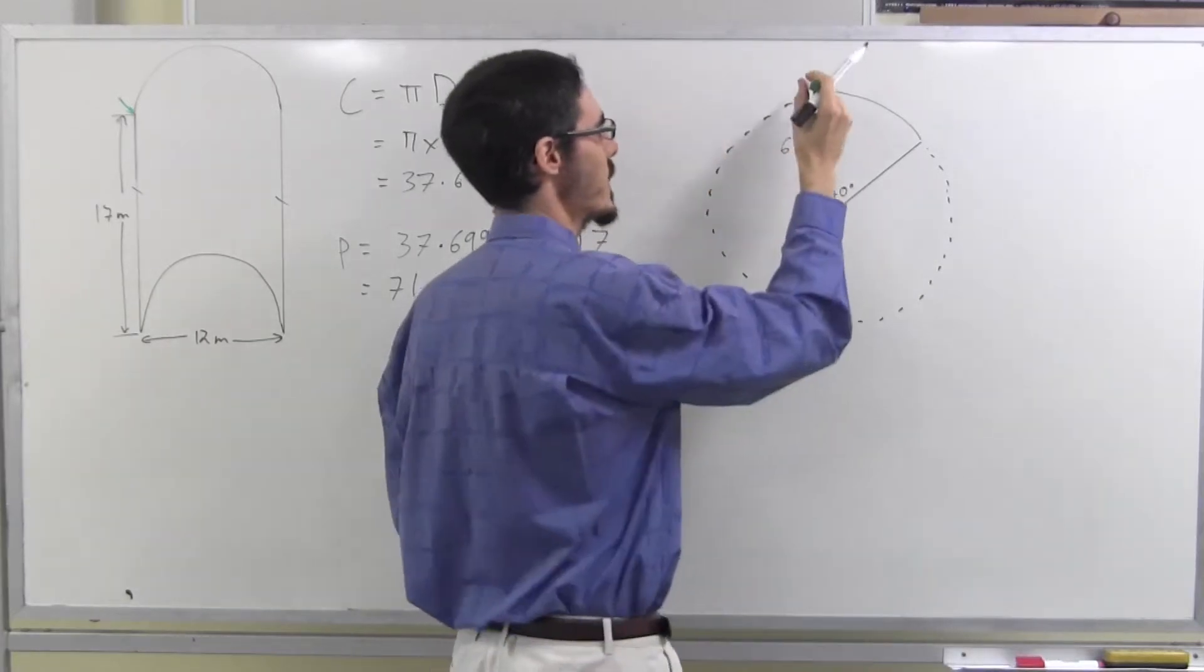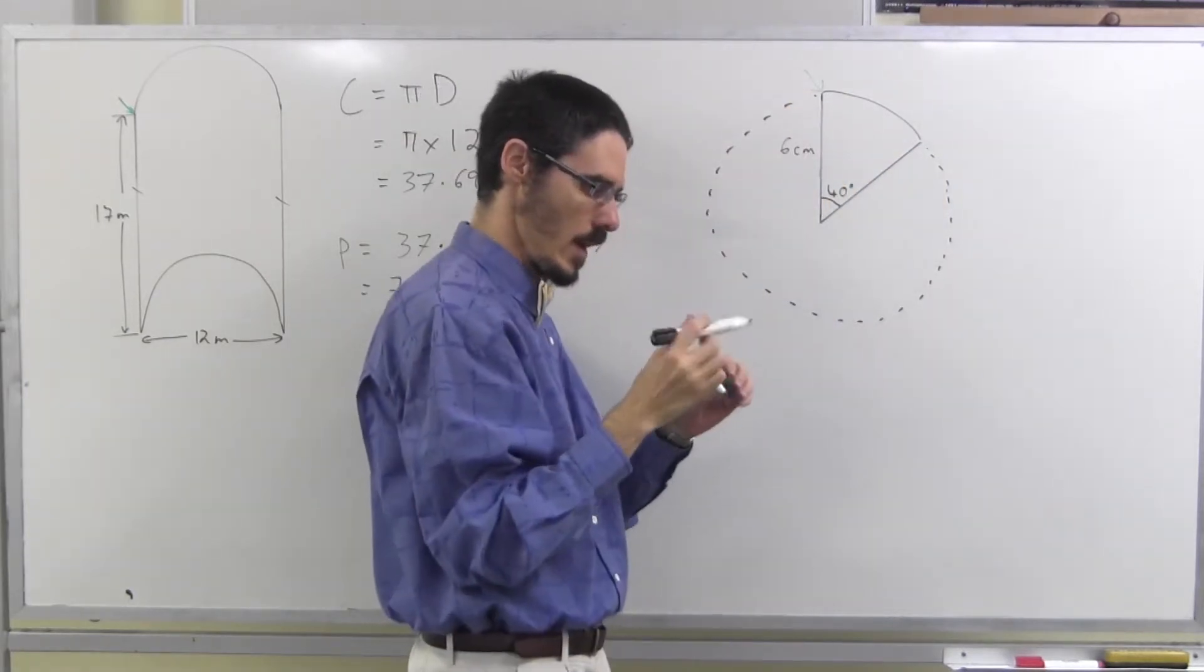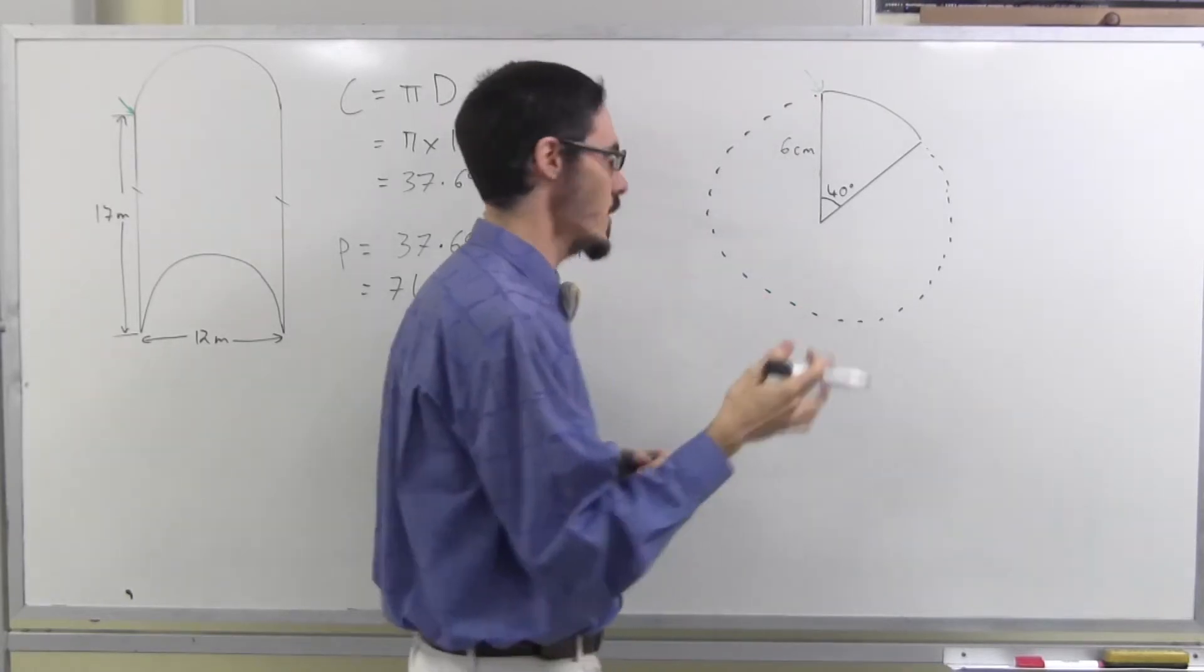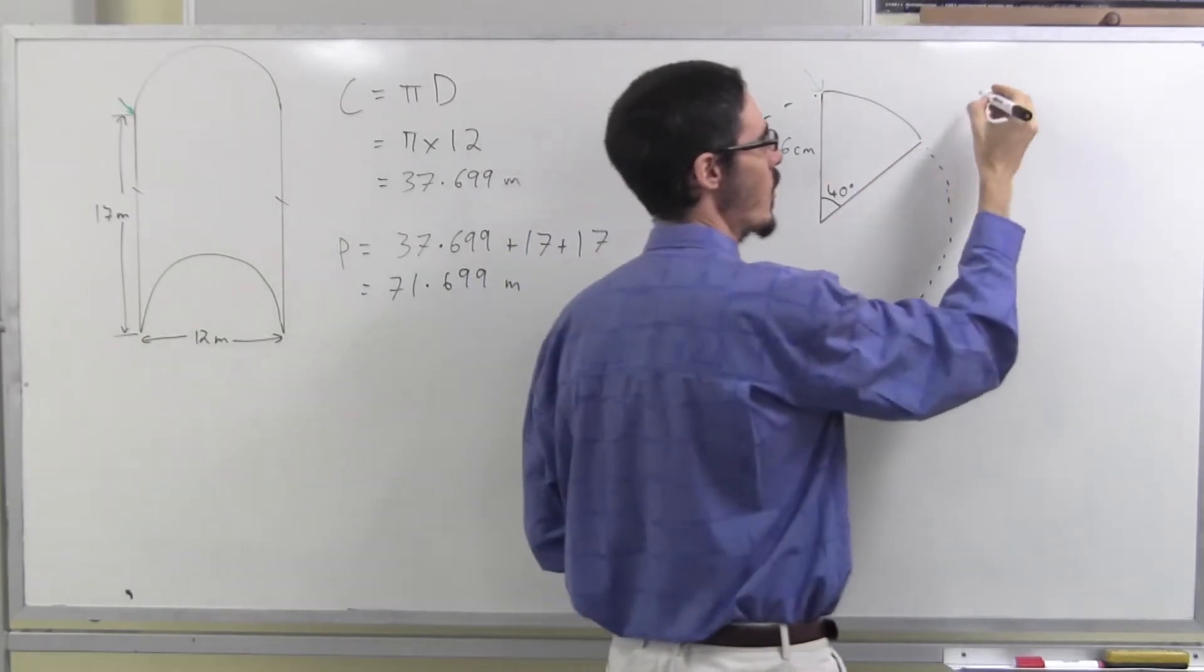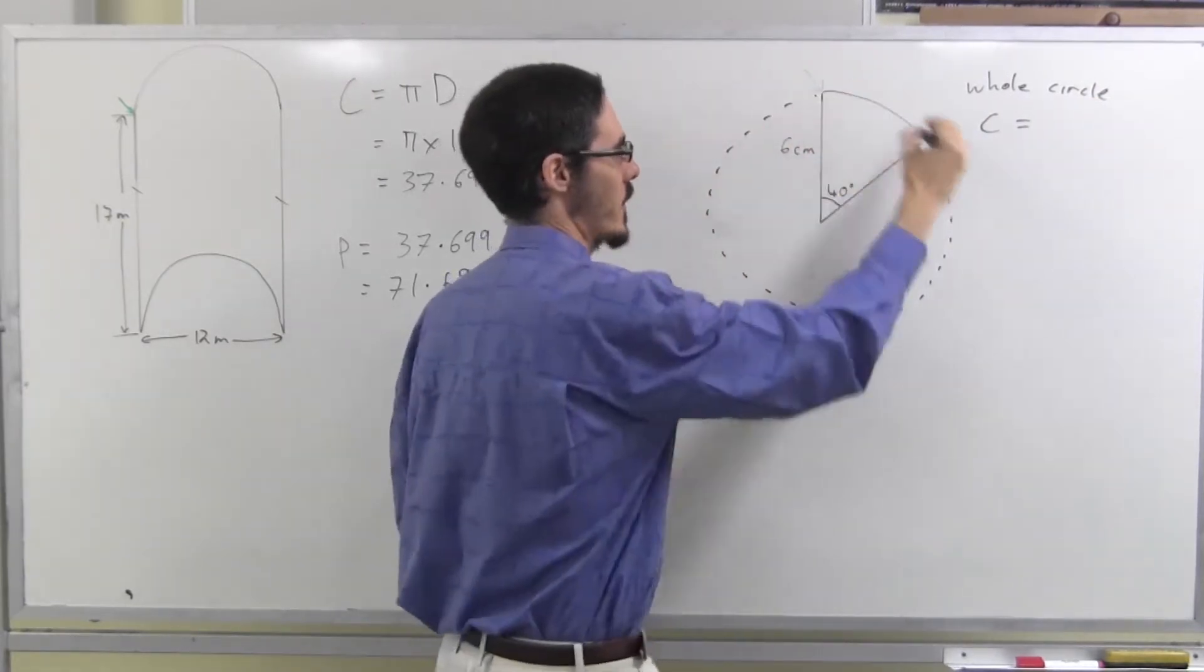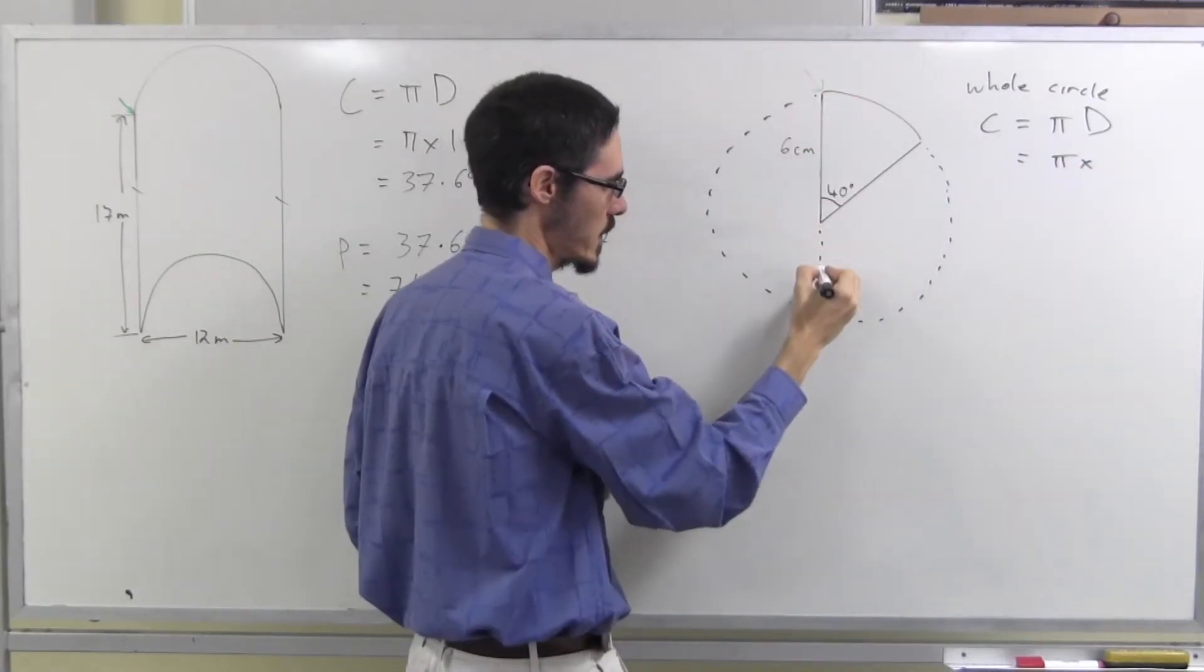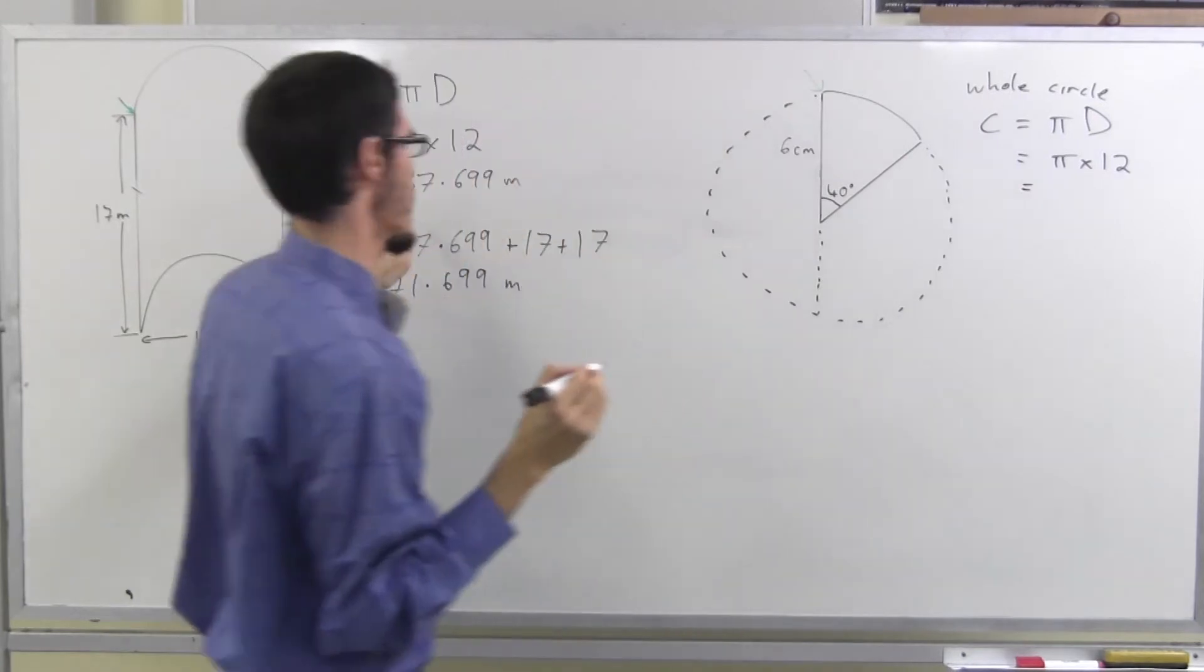So, the perimeter is going to be this curved bit, plus this straight bit, plus that straight bit. And again, as I've said before, it's better, particularly for perimeter, that you don't try and learn fancy formulas for every possible case. Instead, reason your way through it. What does it mean? Well, this curved path, if it was a whole circle, then the perimeter would be the circumference of the circle. Pi times diameter. Well, what's the diameter here? The diameter is all the way across the circle. 6 plus 6, making 12. I just worked that out over here. So, let's use it.